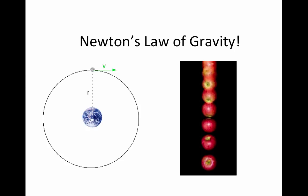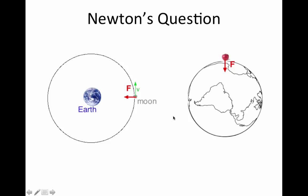Newton's Law of Gravity begins with Newton's question. You may have heard about an apple falling out of a tree and hitting Newton in the head — I really doubt that happened. But Newton was inspired by the fact that apples fall to the ground when they break away from a tree. He wondered: if an apple is pulled to the earth by gravity, is that the same force that pulls the moon around the earth?